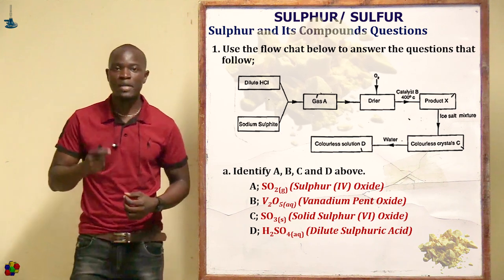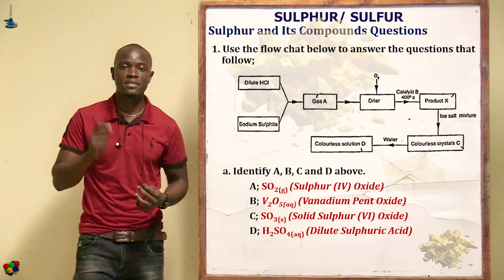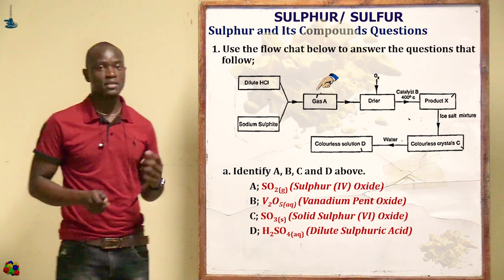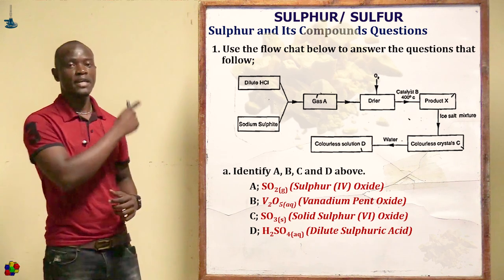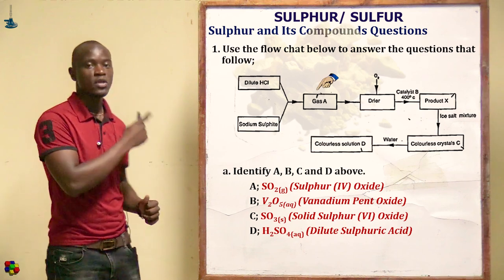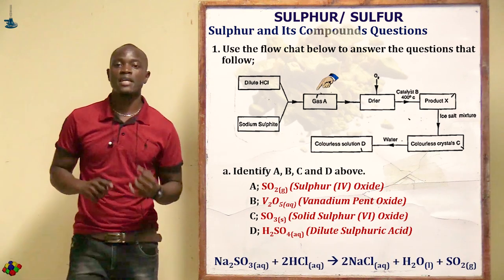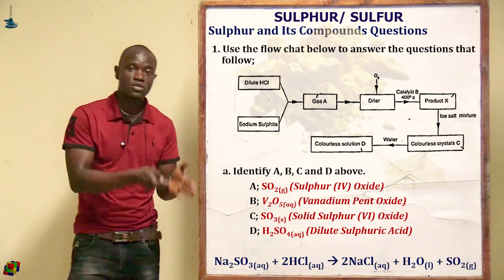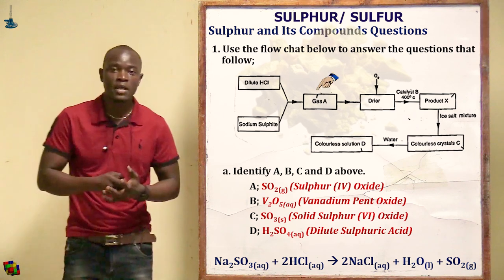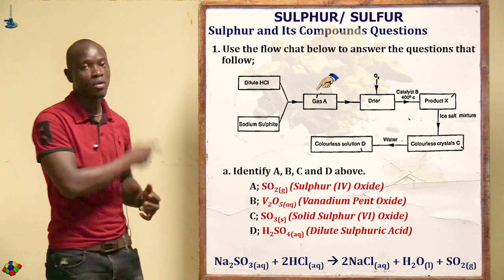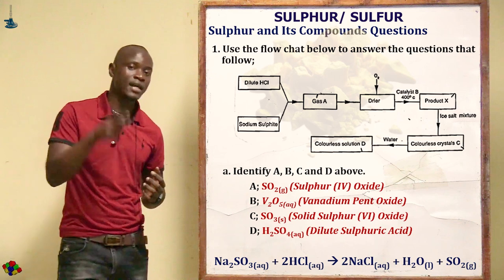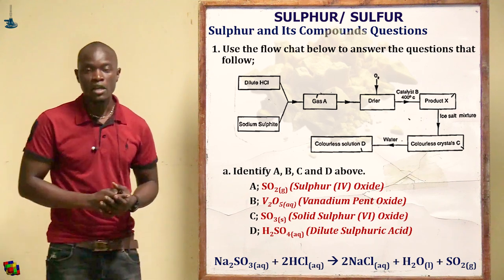The first question asks us to identify A, B, C, and D. Looking at the flowchart, dilute hydrochloric acid reacts with sodium sulfite to produce gas A. When dilute hydrochloric acid reacts with sodium sulfite, we get sodium chloride, water, and sulfur dioxide (SO₂). Sodium chloride is solid, water is liquid, and the gas is sulfur dioxide.